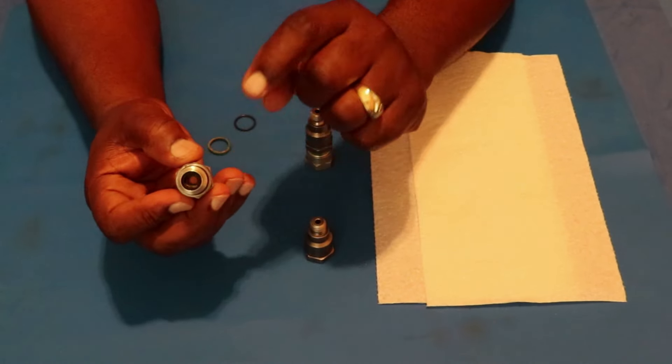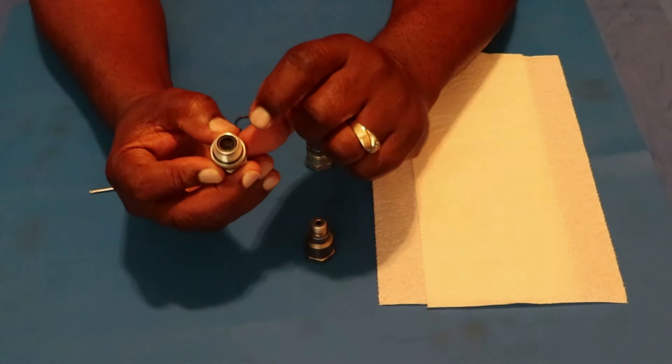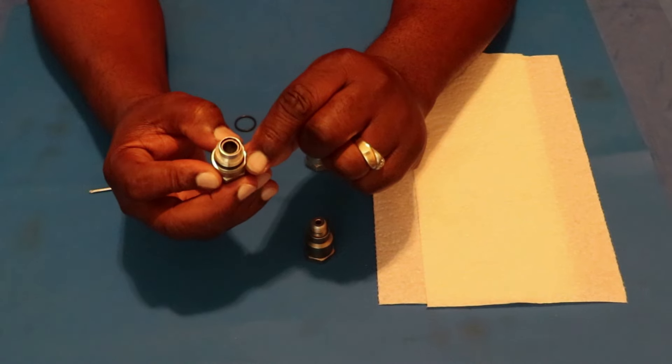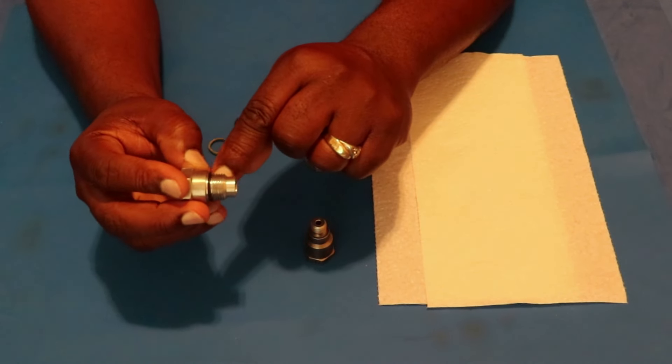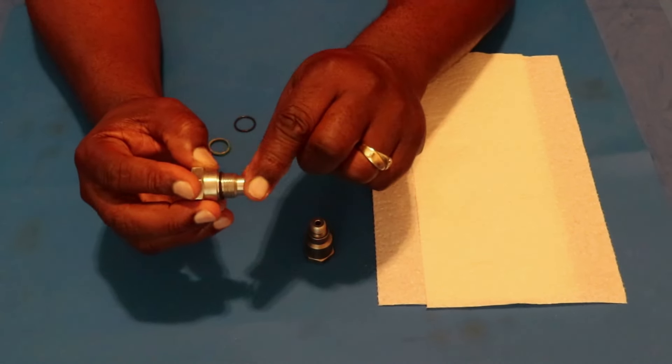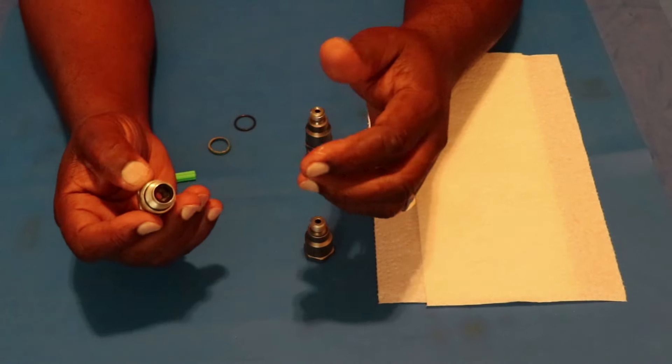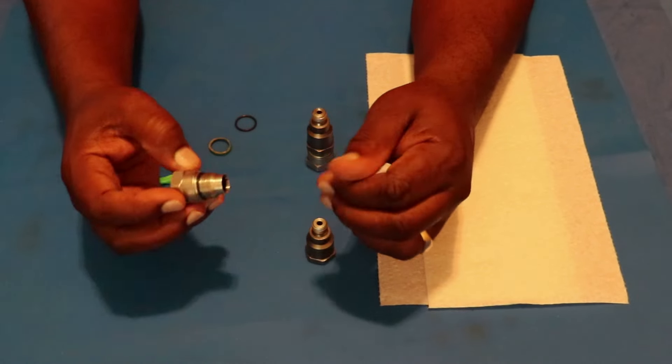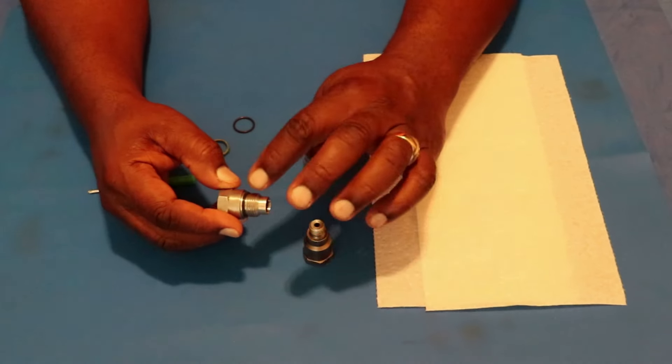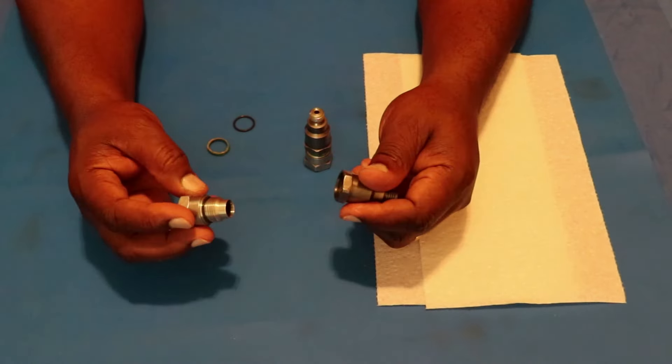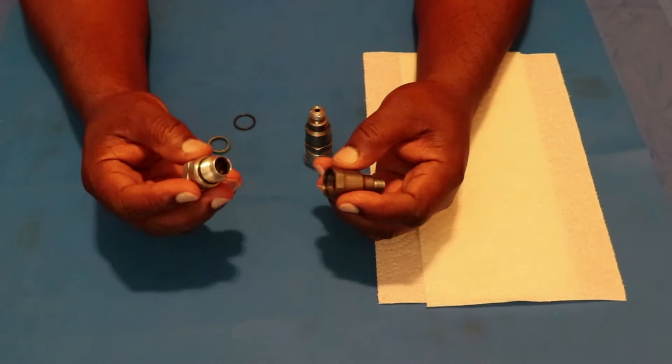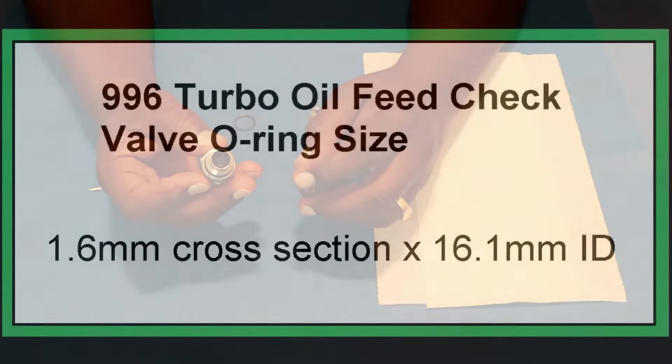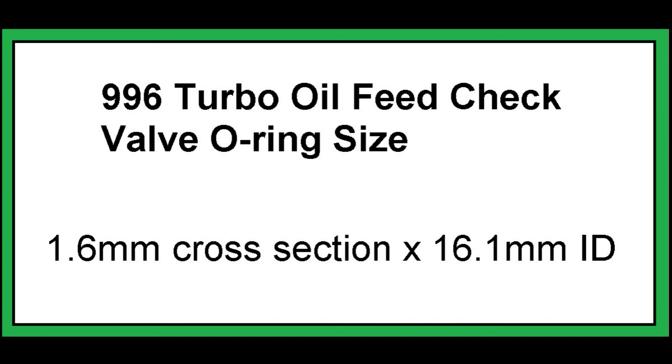What size is it? O-rings are sized by the cross-sectional area and the inside diameter. So the cross-sectional area of this o-ring is 1.6 millimeter and the inside diameter is 16.1 millimeter. You can get these anywhere. This is just oil so it doesn't need to be Viton or anything, it doesn't come in contact with benzene. Mine are Viton just because I have a bunch of them around, but it doesn't have to be. That's the size, I'll put up a card for that so you can look it up if you want to buy these in advance if you want to service your check valves.